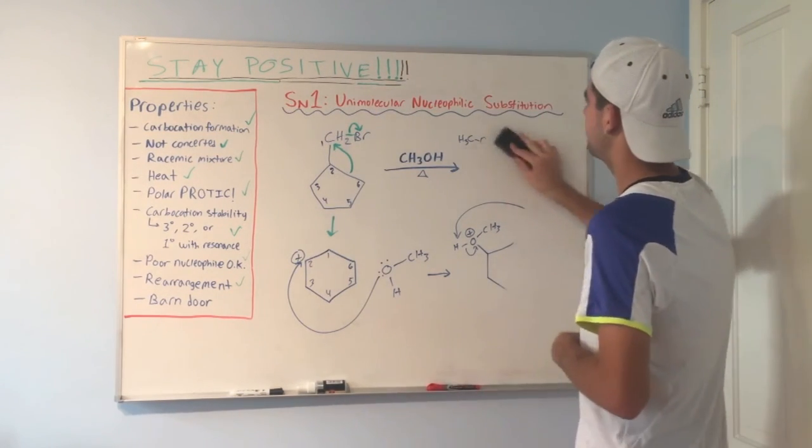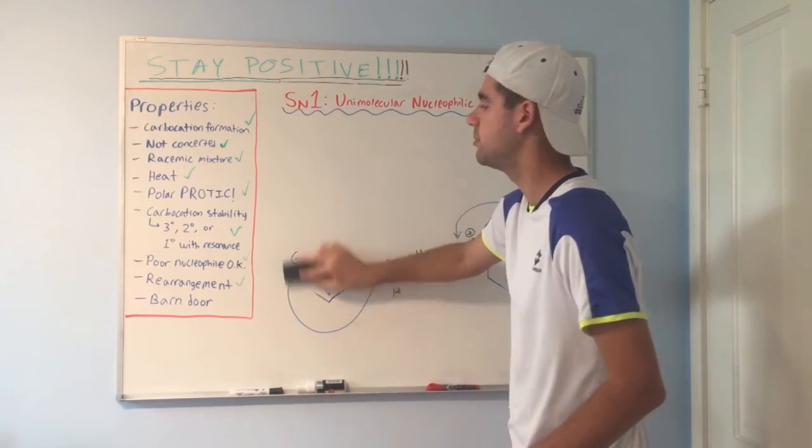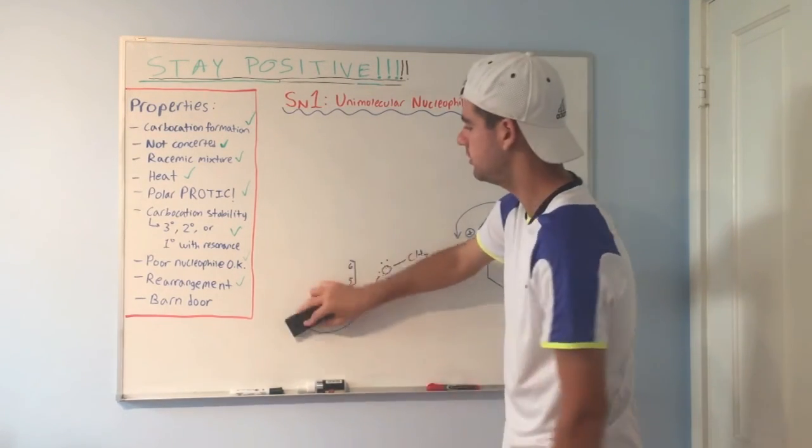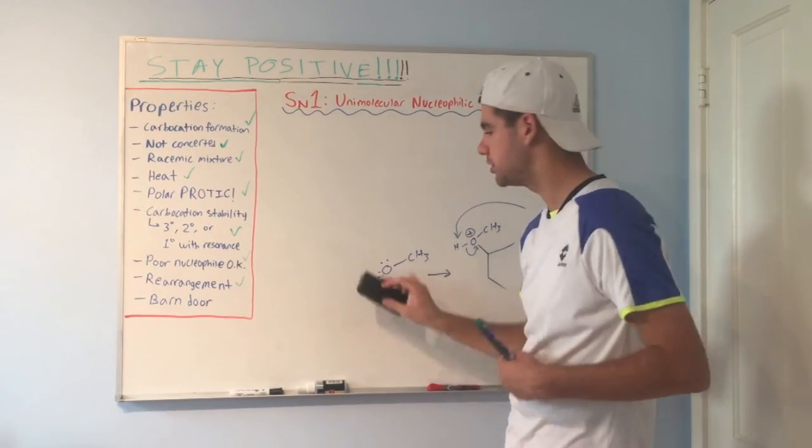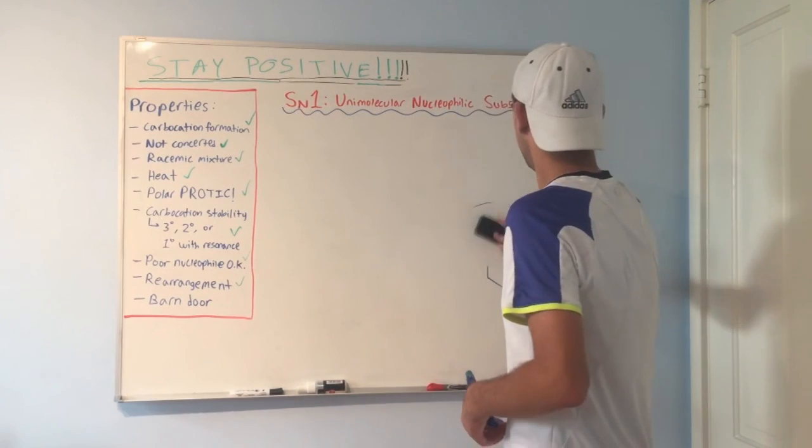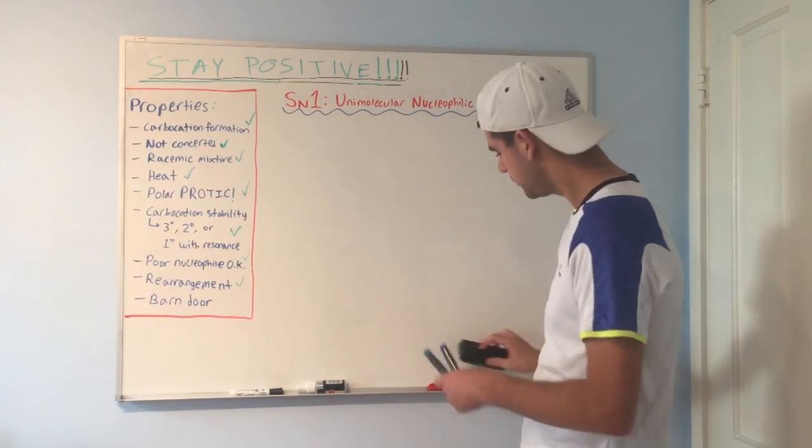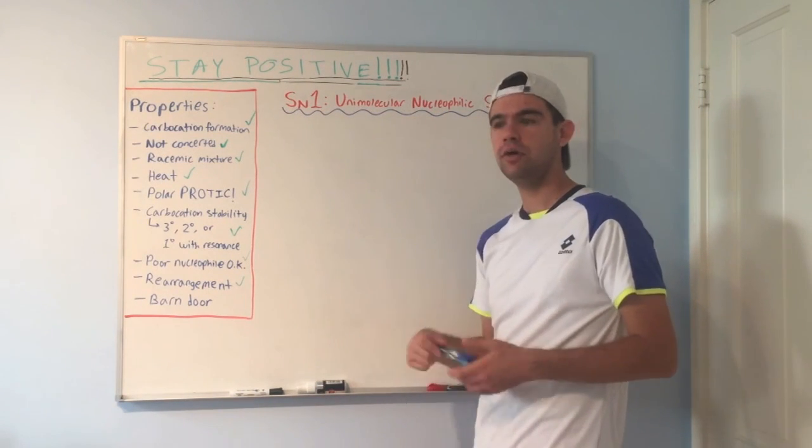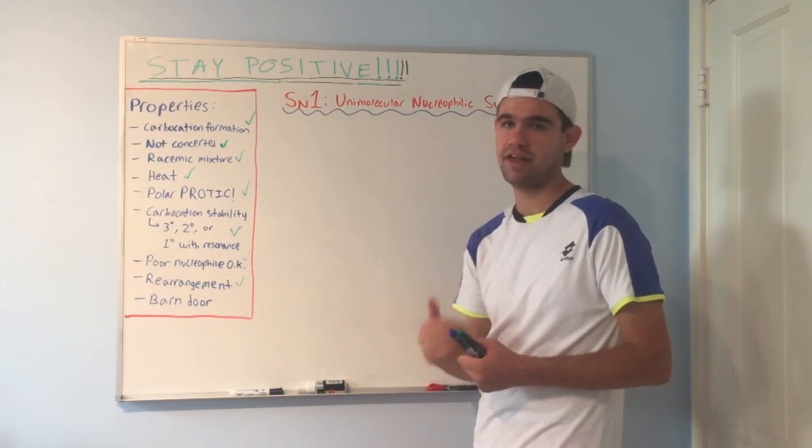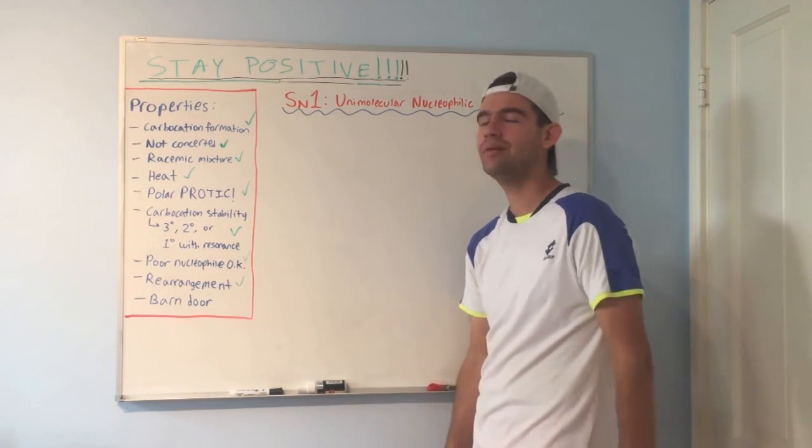So overall, SN1 reactions are a little more complicated than SN2 because they're multiple steps. They're not concerted. It involves thinking about the best way to arrange your carbocation. So it really involves a lot of thinking ahead. But with enough practice, you'll get it. What I'm going to do next, since I'm running short on time, I'm going to make another video on just a bunch of worked examples for SN1. Hopefully that'll be helpful. So thanks again for watching and I really hope this helped.